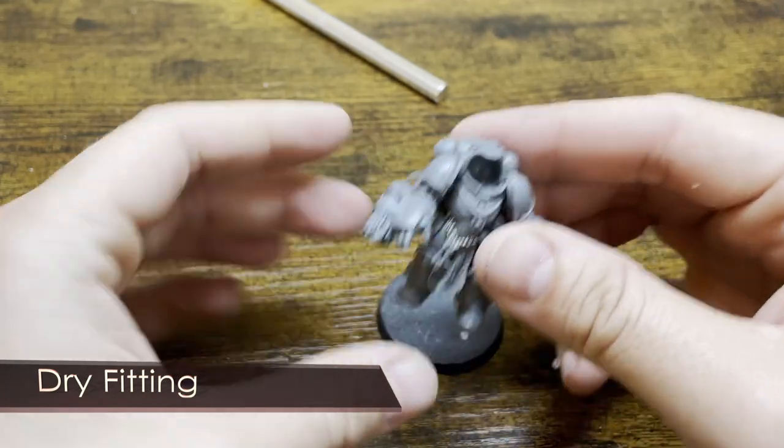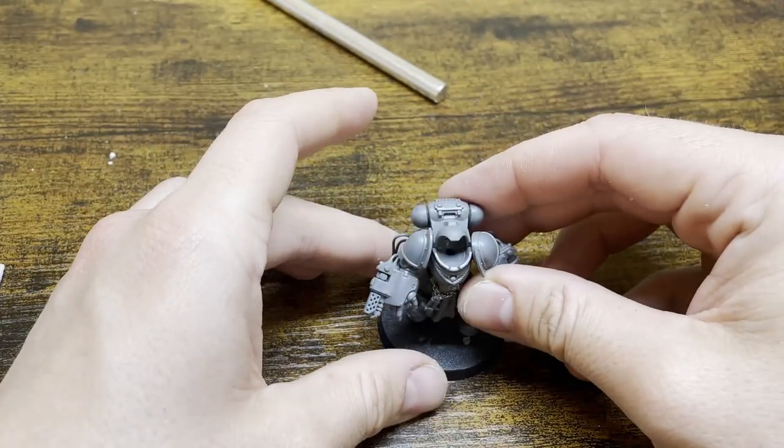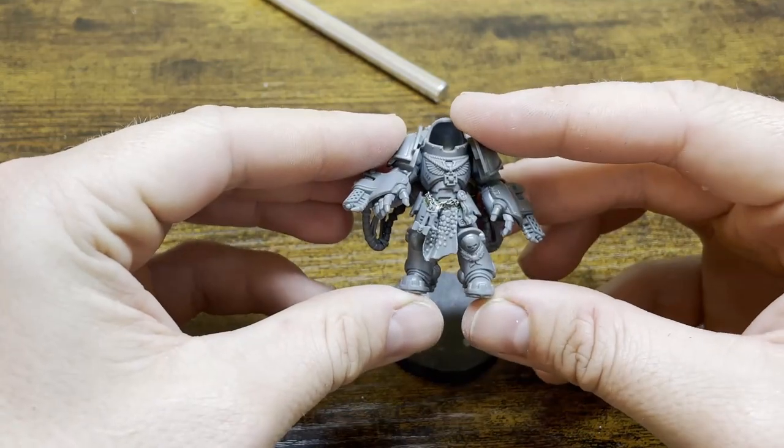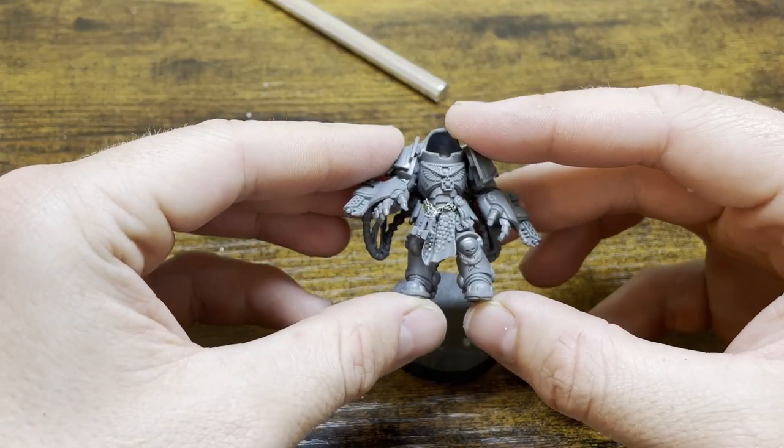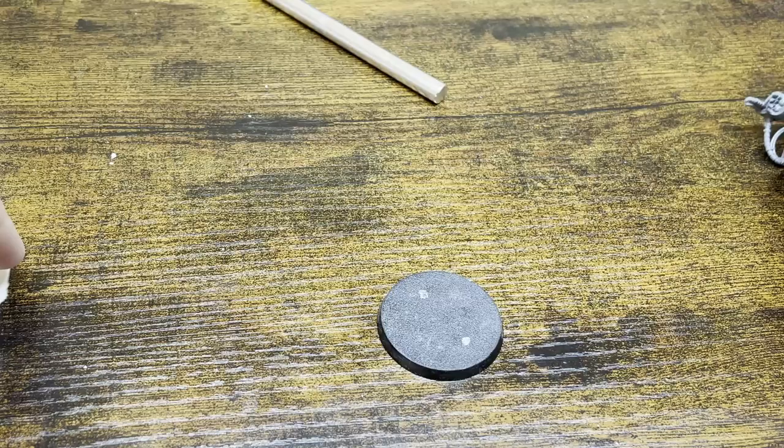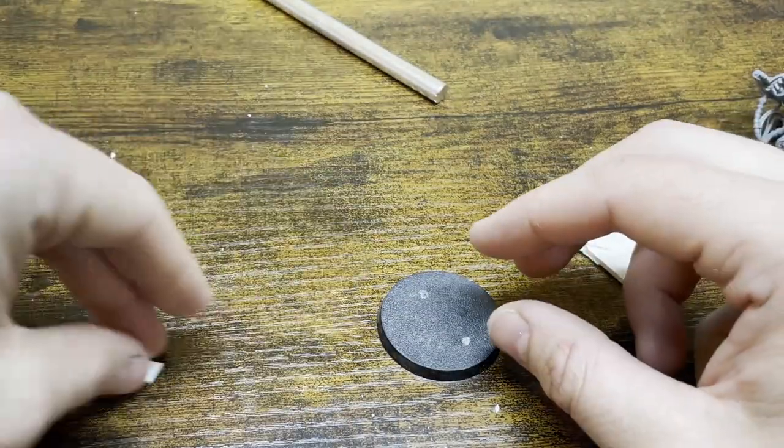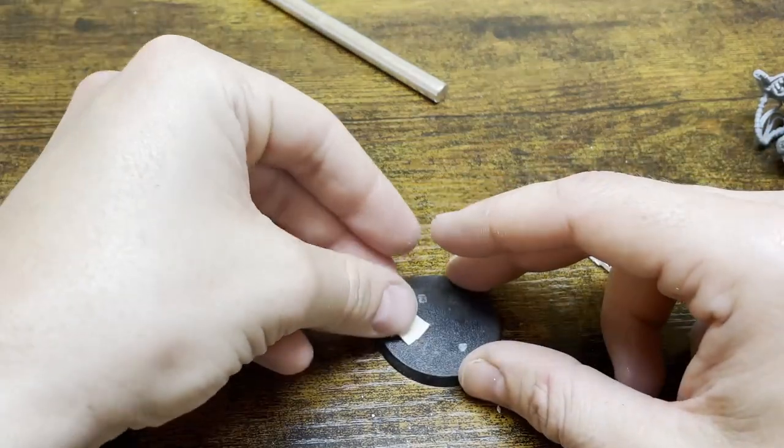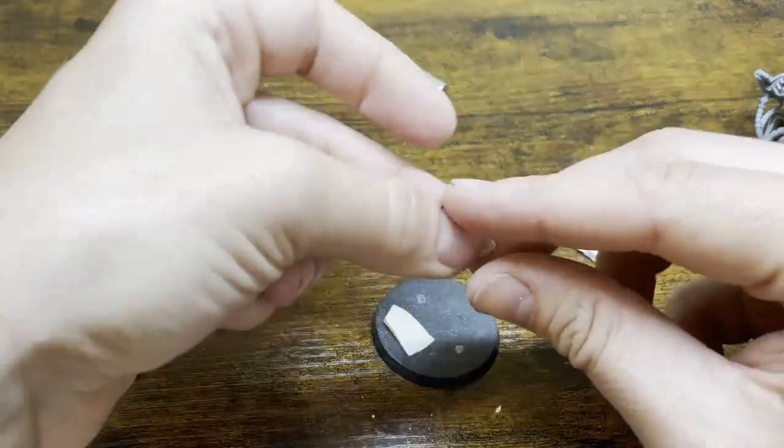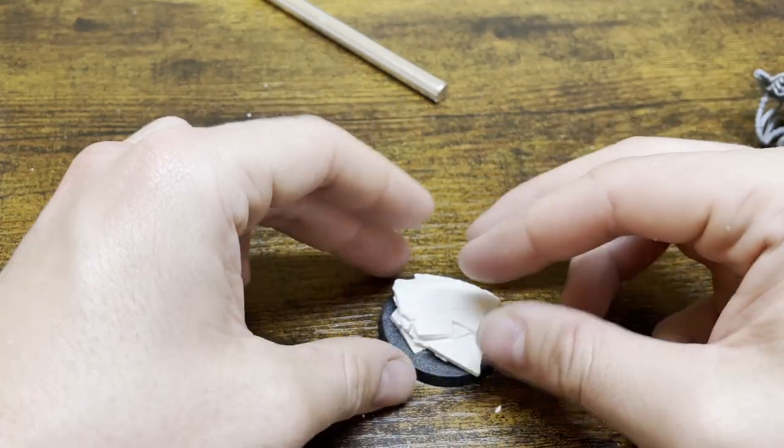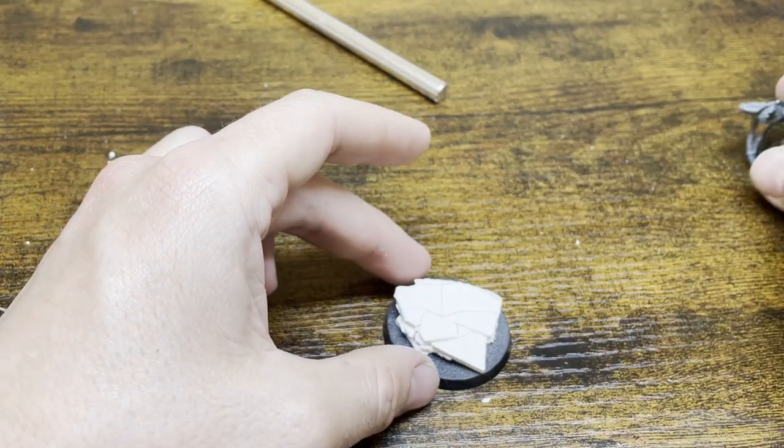Next up we're going to dry fit our materials. This kind of gives us a layout before we commit to gluing it down. It's also smart to keep in mind what model you're going to use as their stance could dictate the layout that you choose. I'm going to start by grabbing a couple pieces and seeing how they fit on the base. I usually like to grab a couple smaller pieces and use them underneath so it creates a little bit of a gap. This gap allows me to put things like paper clips, pipes, and things coming out from underneath the concrete.